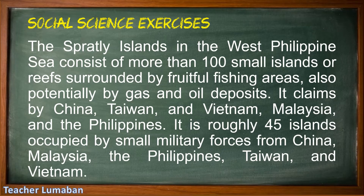The Spratly Islands in the West Philippine Sea consist of more than 100 small islands or reefs surrounded by fruitful fishing areas and potentially gas and oil deposits. They are claimed by China, Taiwan, Vietnam, Malaysia, and the Philippines. Roughly 45 islands are occupied by small military forces from China, Malaysia, the Philippines, Taiwan, and Vietnam.